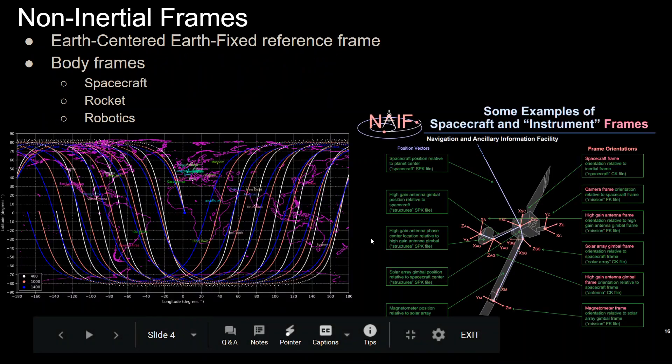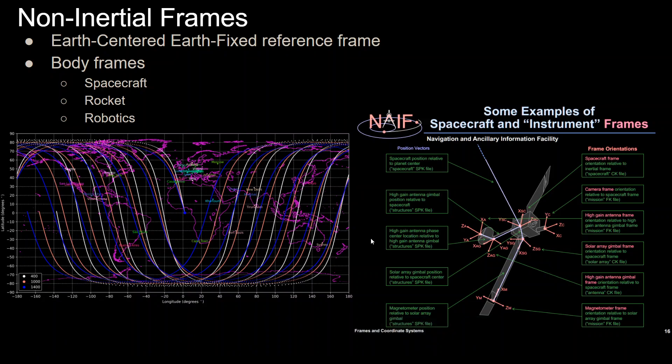So we get to non-inertial frames. One example is just anything that's rotating or accelerating. One example of this is the Earth-centered Earth-fixed frame which is basically just like the J2000 frame equatorial, but it's rotating with the Earth. Every day it makes one 360-degree rotation as the Earth rotates, so it's fixed to the Earth.